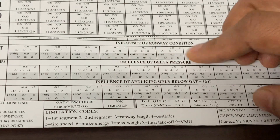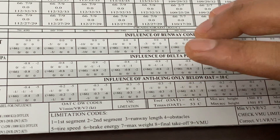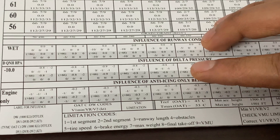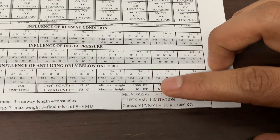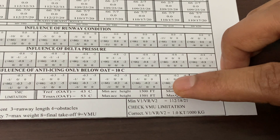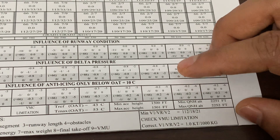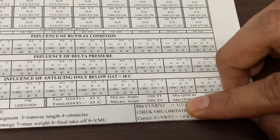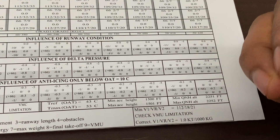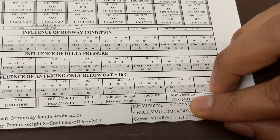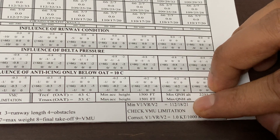When applying corrections, follow a specific sequence — apply them in the order shown on the chart. In addition to this chart, follow the corrections given in the FCOM, such as VMU limitations. At the bottom of the chart, minimum V1, VR, and V2 values are given — for example, 112, 118, and 121. When applying corrections or decrements to V-speeds, the speed values must not go below these minimum values.